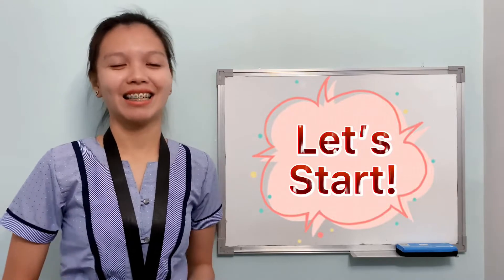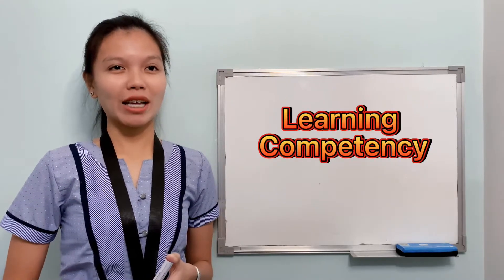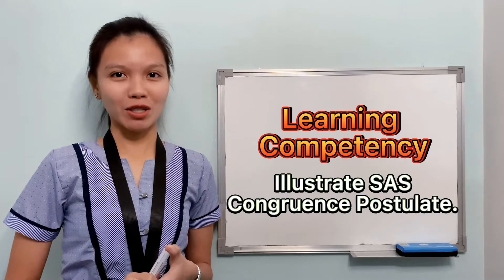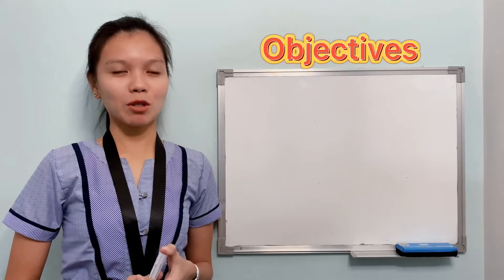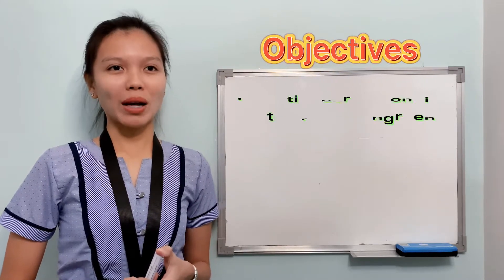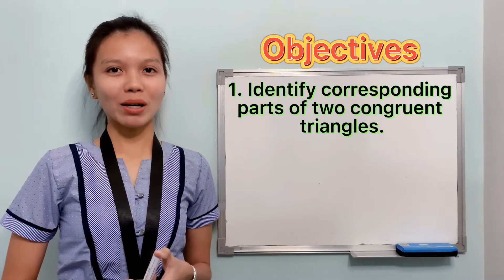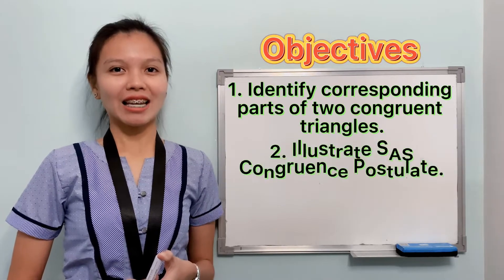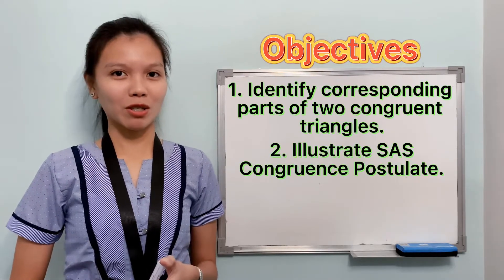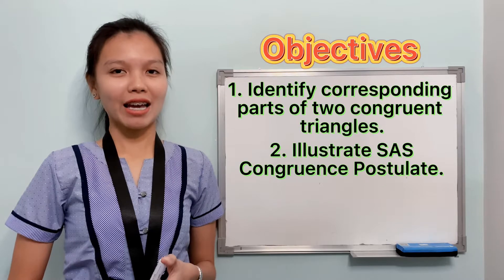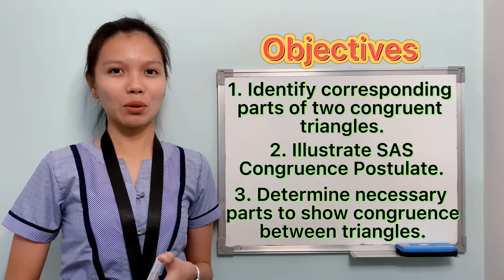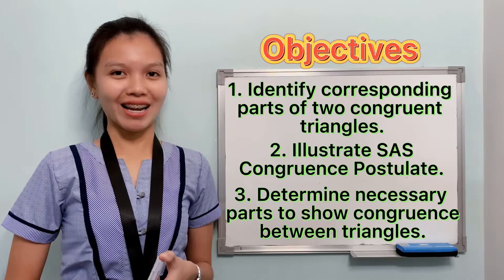Let us start! Our learning competency for today is to illustrate the SAS congruence postulate. Our objectives are to identify the corresponding parts of two congruent triangles, illustrate the SAS congruence postulate, and to determine the necessary parts to show congruence between triangles.